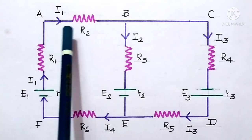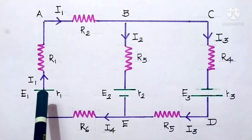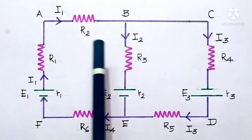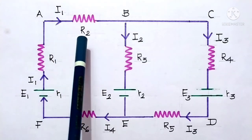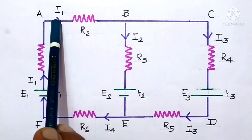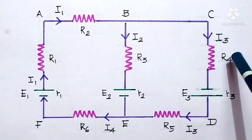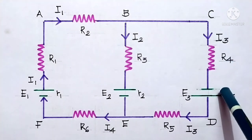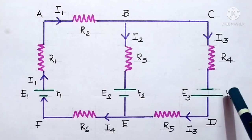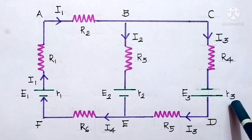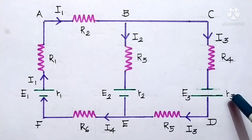Our moving direction can be taken either clockwise or anti-clockwise — it is left to us. We need to multiply them up. Here: I3 times R4, and here comes a cell. The cell also has got an internal resistance R3, so we need to multiply this current I3 with R3 also.